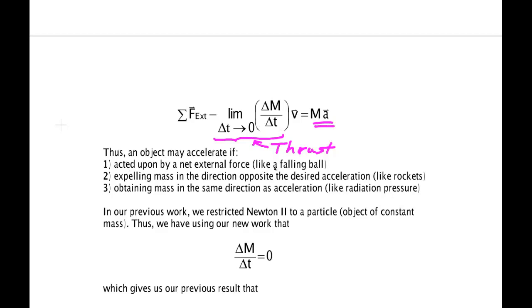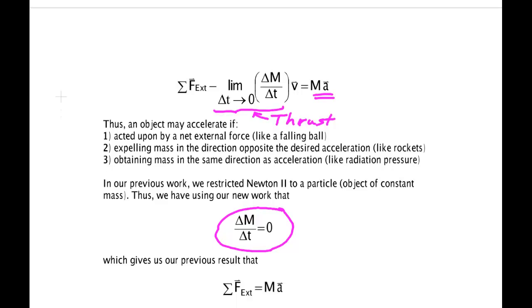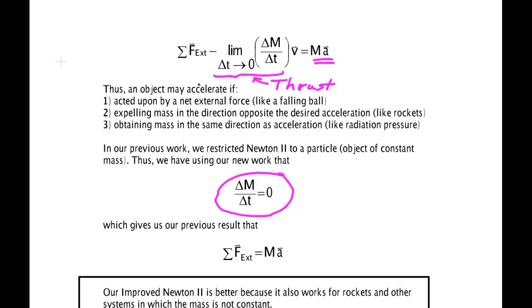Thus an object can be acted upon by an external force. It can expel mass in the direction opposite the way it wants to accelerate. Or you can even obtain mass in the same direction. That is, you can gain mass and you can slow down. All of this comes to be exactly the same as our old Newton law if ΔM over Δt is zero. Because if that term is zero, then this goes away and we get the junior varsity version of Newton's law that only works for particles.